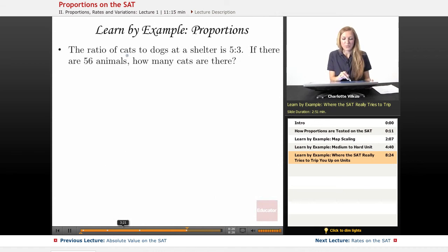For this problem we have that the ratio of cats to dogs at a shelter is five to three, and then we want to know if there are 56 animals, how many cats are there.